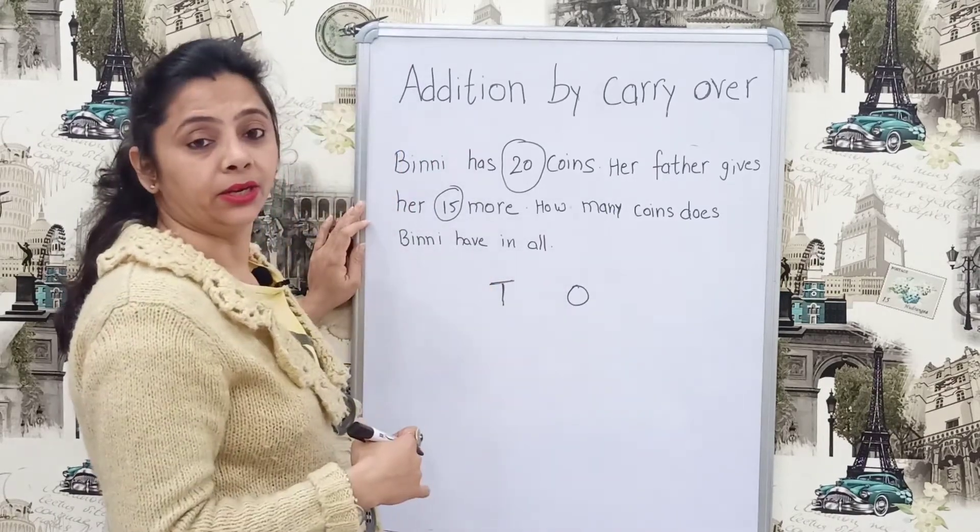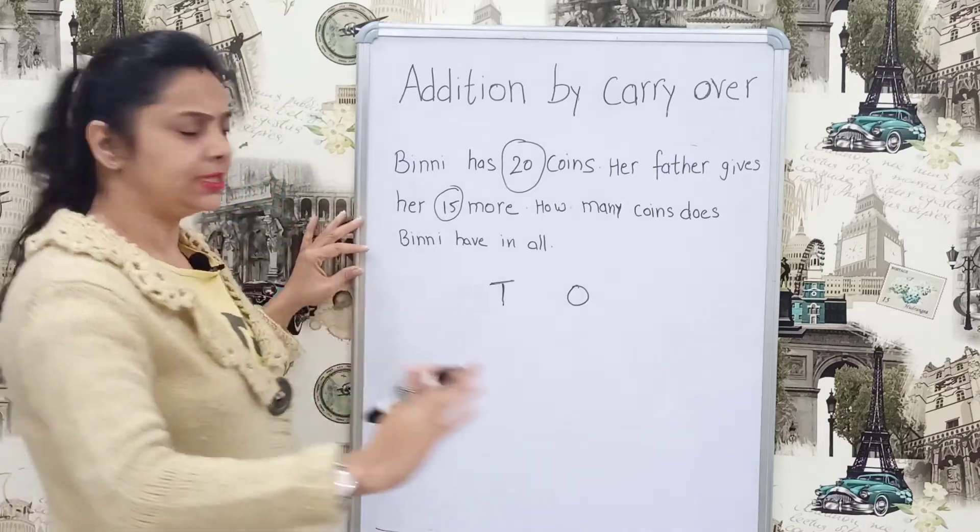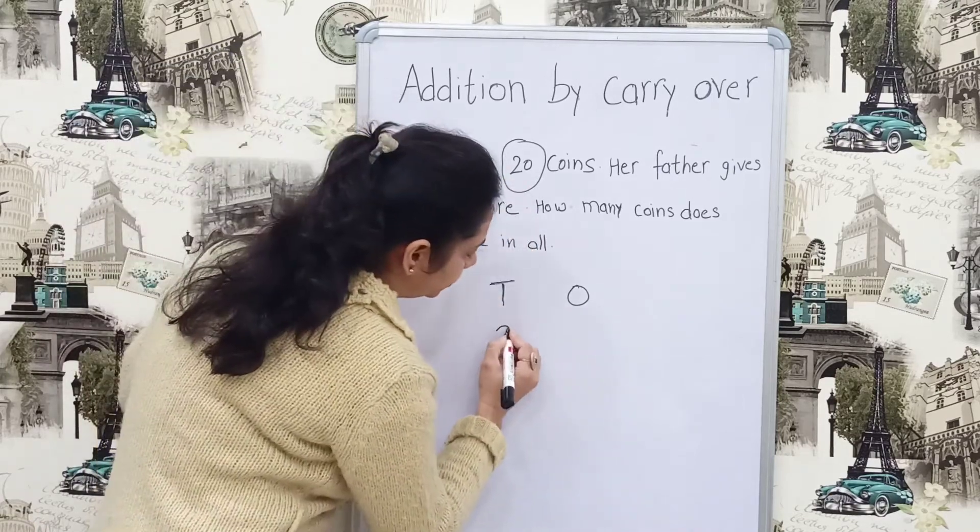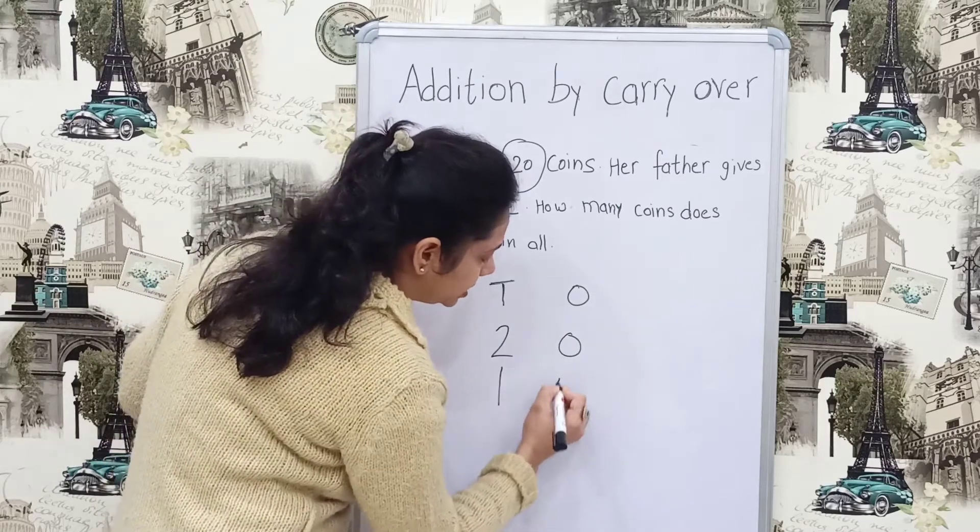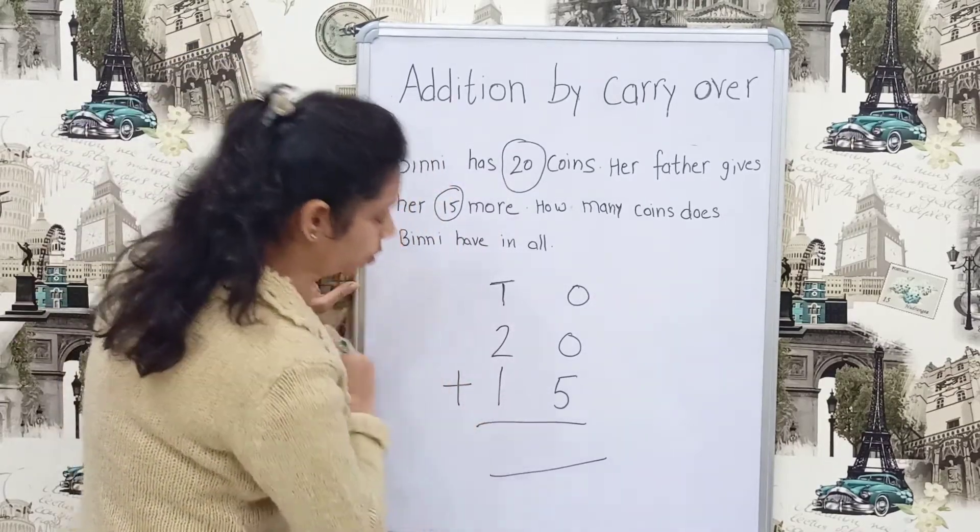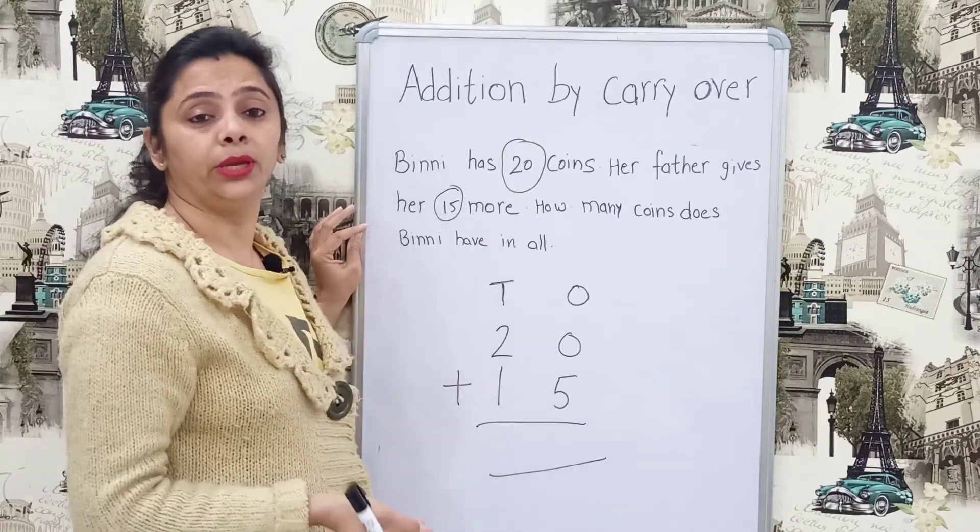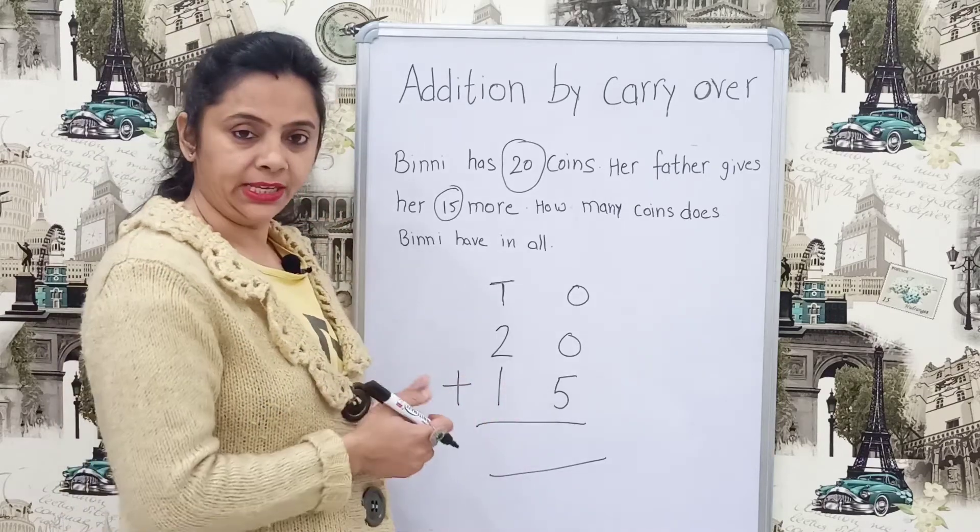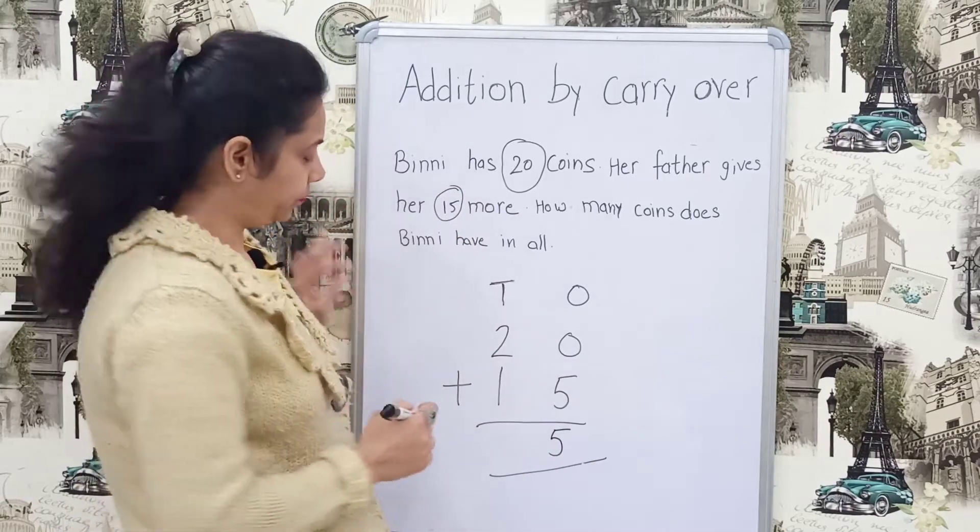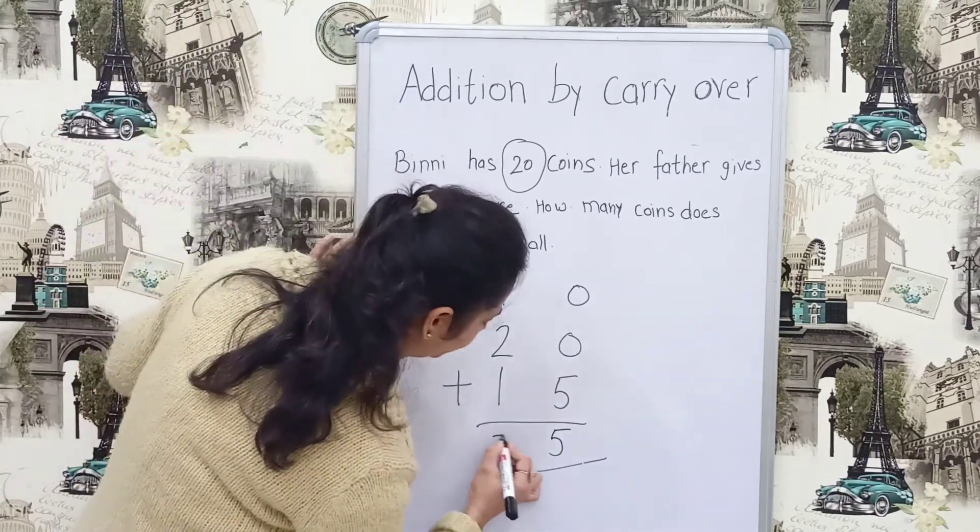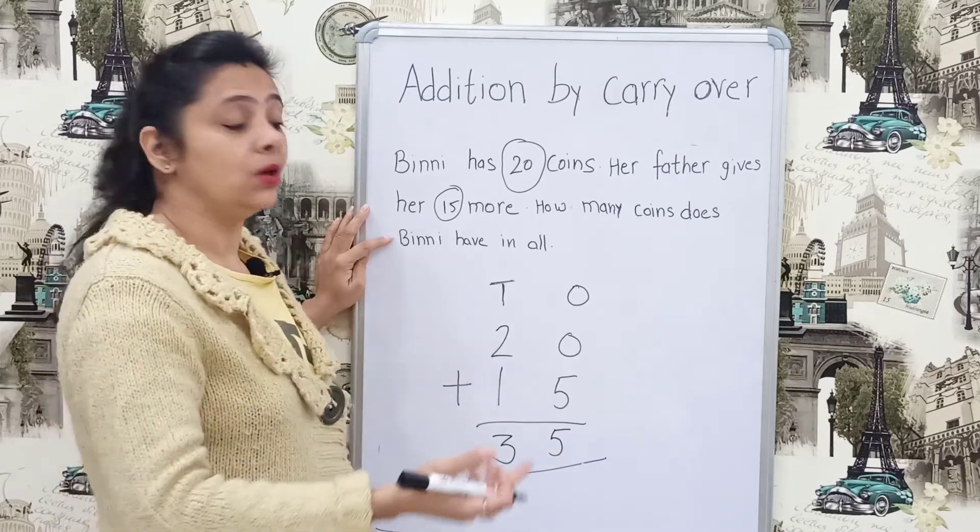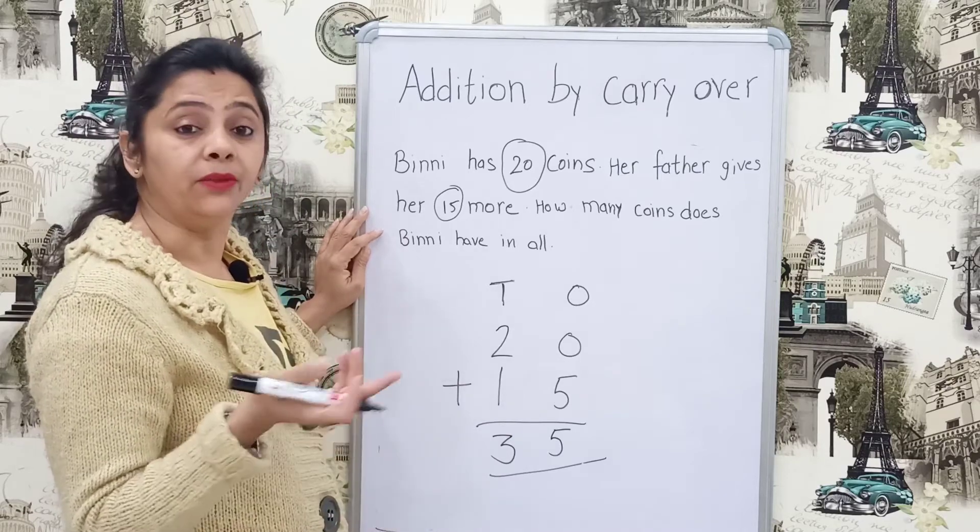Her father gives her how many coins more? 15. How many coins does Binny have in all? Very easy, very simple. Firstly, you will write 1s and 10s. After that, 20 was the first number and then 15. Put the addition plus sign here. Don't forget to use, just put the mark which sum you are doing. Now it is very easy for you. 5 plus 0, 0 means nothing, 5. 1's place addition of 1's place is 5. 2 plus 1, 3. Sum is very simple for you, isn't it? Answer is 35. What 35? This is word problem, so you have to write what is 35. Coins. Binny has 20 coins, so just write coins here.